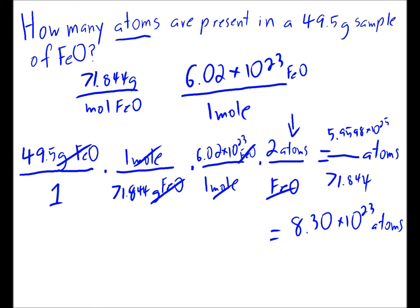So in 49.5 grams of FeO, there are 8.30 times 10 to the 23rd power atoms. There are some sample problems after this—give those a try. There will be some more videos later on to help you out with some other specific kinds of problems that you may encounter.